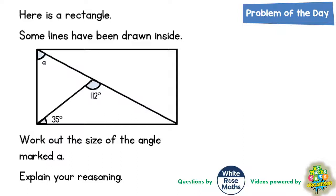So let's take a look at what we've got. Here is a rectangle, some lines have been drawn inside. Work out the size of the angle marked A and explain your reasoning.